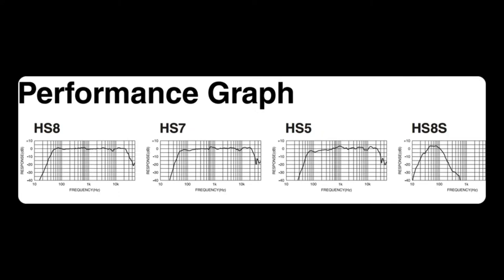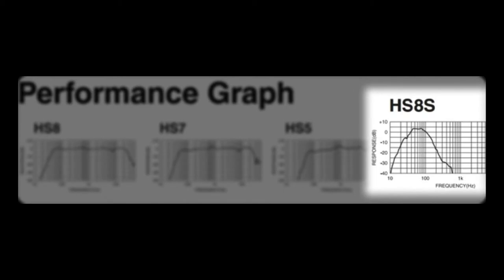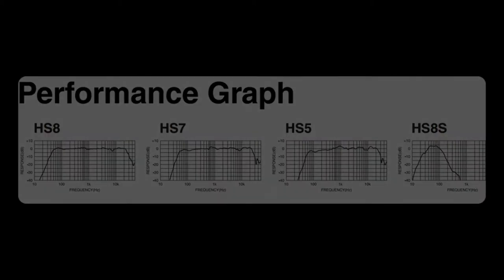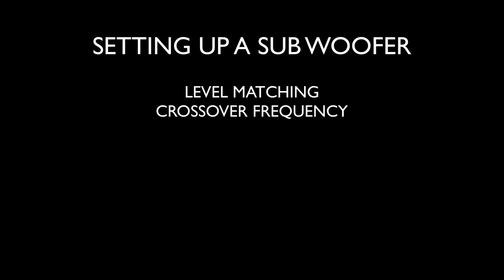We've also got the HS8S subwoofer, which has a very unusual-looking frequency response because it's designed to be used in combination with your monitors. When setting up a subwoofer, you bring the level so it matches that of your normal monitors — it's not there to add extra gain, it's just there to extend the low end as an extension of your frequency range and nothing more. Things you need to be careful about are how loud you set it, the crossover frequency between your sub and your monitors, and also making sure it's phase-aligned. The location of it in your room matters because wherever it is it's going to change the phase, so you can use phase alignment software to make sure that's correct.